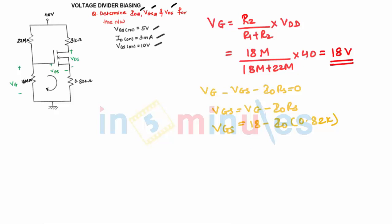Now, in this case, when ID equals zero, my VGS will be 18 volts. When VGS is zero, ID will be VG upon RS, which will be 21.95 milliampere.